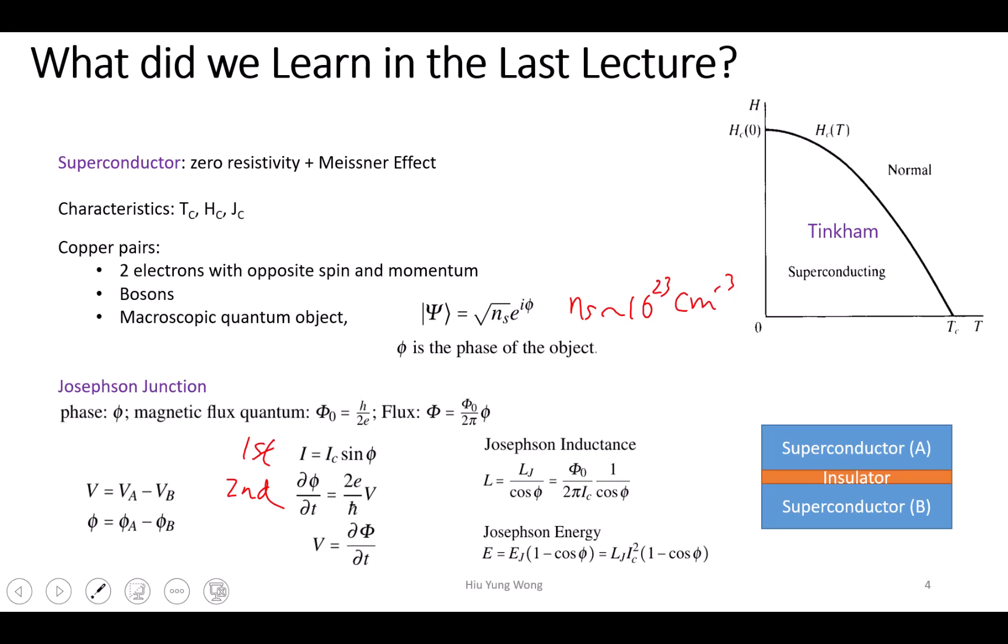You create a back EMF due to this—what is the law? Faraday's law. You go back to electromagnetics, the curl of the electric field. So the electric field potential equals negative ∂B/∂t.